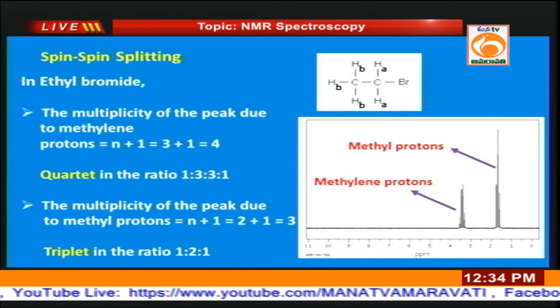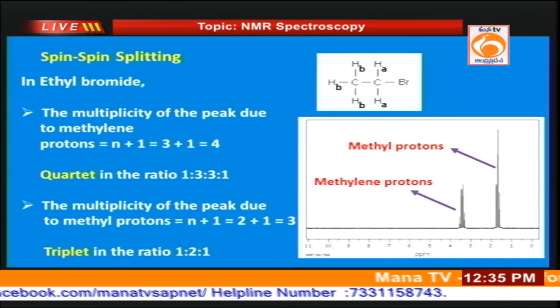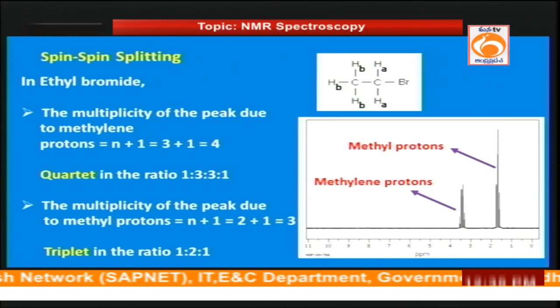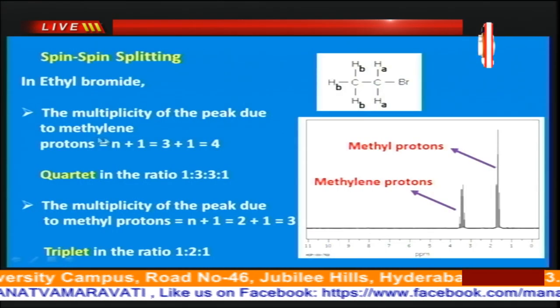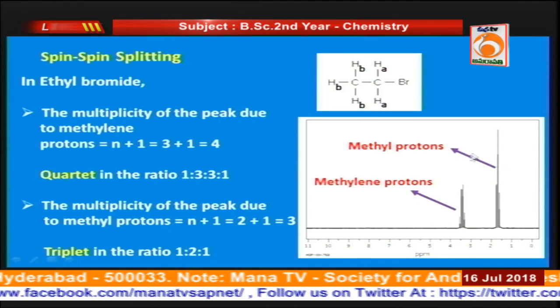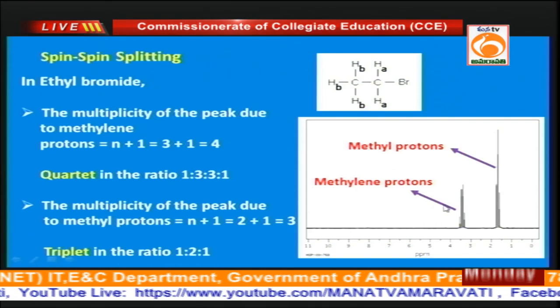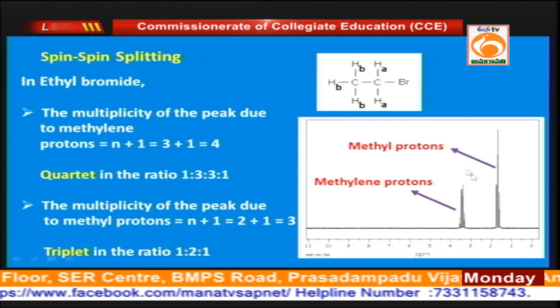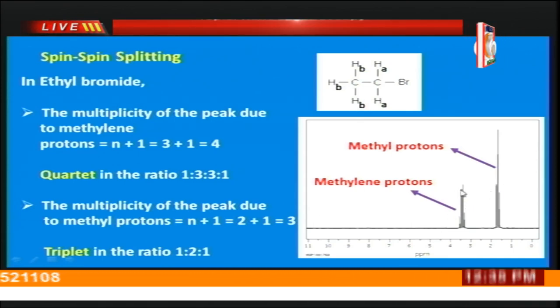Now let us consider spin-spin splitting in ethyl bromide. The methyl protons, being chemical shift equivalent and also magnetically equivalent, will not couple with one another. Similarly, the methylene protons will not couple with each other. But the methyl protons will couple with the methylene protons and vice versa. The multiplicity of the peak due to methylene protons is 3 + 1 = 4 (quartet), because the methylene protons couple with 3 methyl protons. For the methyl protons, the number of neighboring protons is 2, so we observe a triplet. The methylene protons give a quartet in the ratio 1:3:3:1, while the methyl protons give a triplet in the ratio 1:2:1.